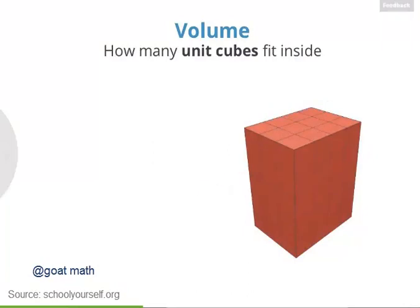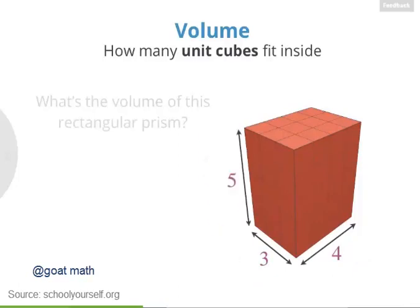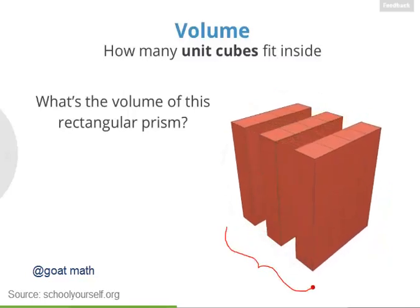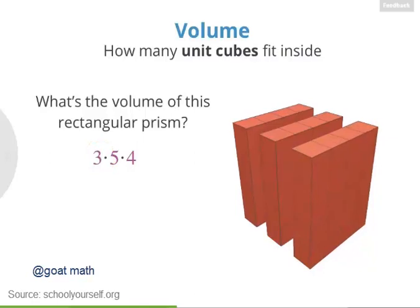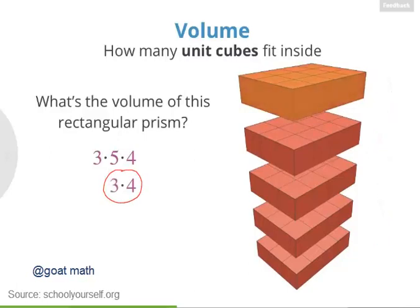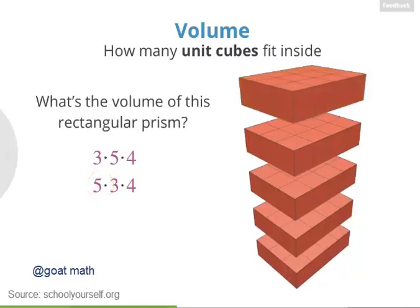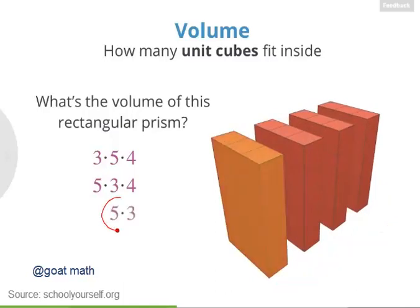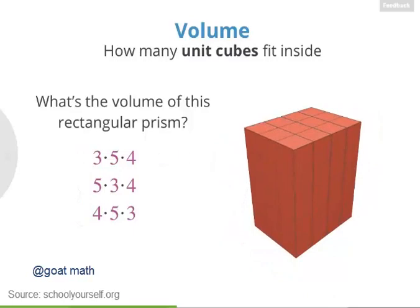Now take a look at this rectangular prism. Its base has a length of 3 and a width of 4, and the height of this prism is 5. There are a few different ways you could find the volume. One way is to see that there are 3 layers — each layer has 5 times 4 unit cubes, multiplied by the 3 layers. Another way is to see 5 layers — each has 3 times 4 unit cubes, multiplied by 5. Yet another way counts 4 layers — each with 5 times 3 unit cubes, multiplied by 4. All of these expressions give the same volume: 60.